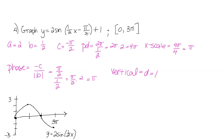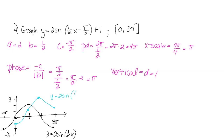Now I shift every plotted point pi units to the right and one unit up. Each key point moves right pi and up one. I only need to go to three pi, so I stop there. I also need a starting point, so I extend back — a point that was at negative pi at value negative two shifts to zero at negative one. Connecting those shifted points gives the final graph: y equals two sine one half x minus pi over two plus one.